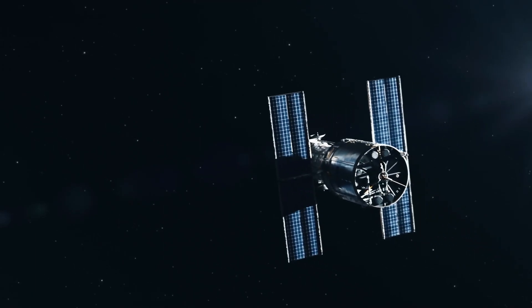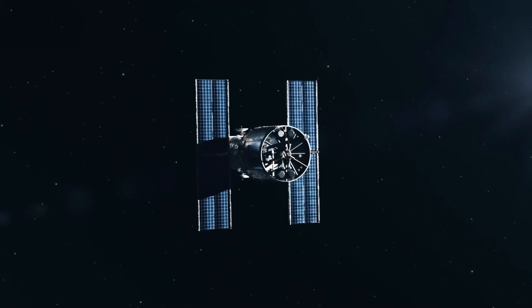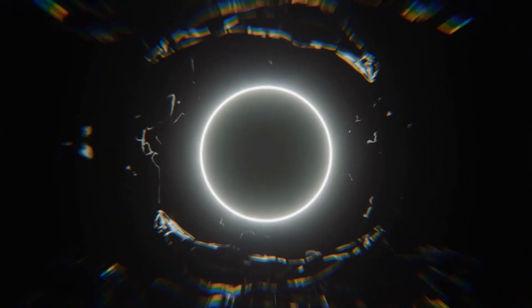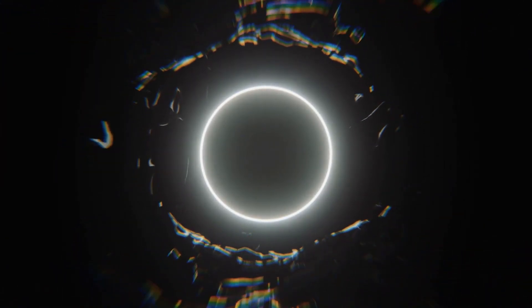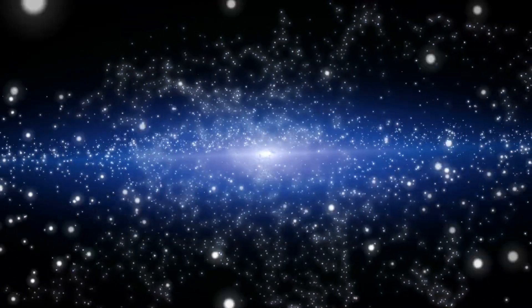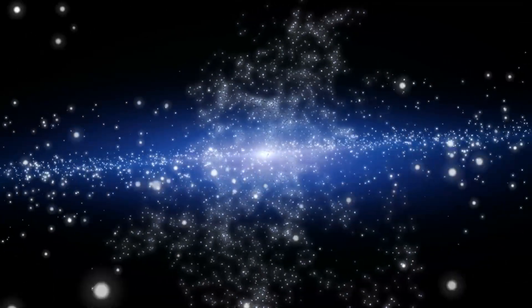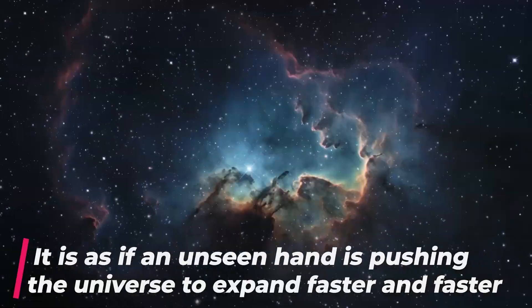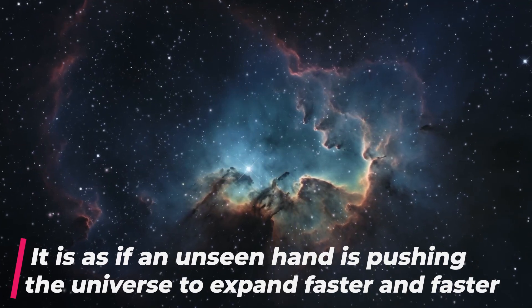Dark matter is a form of matter that does not interact with light or other electromagnetic radiation, making it invisible to telescopes. However, its gravitational influence on visible matter reveals its presence, acting as an invisible scaffold for galaxies and clusters. On the other hand, dark energy is a repulsive force that counteracts gravity and causes the universe's accelerated expansion. It is as if an unseen hand is pushing the universe to expand faster and faster.